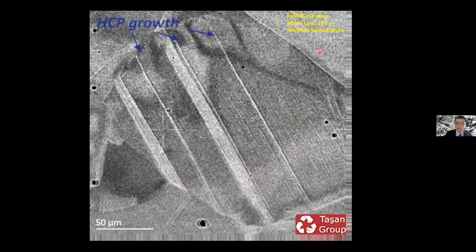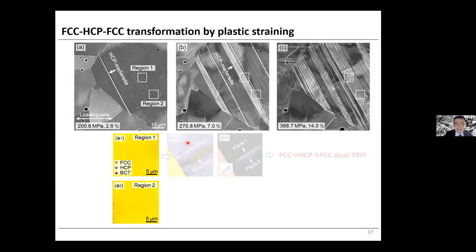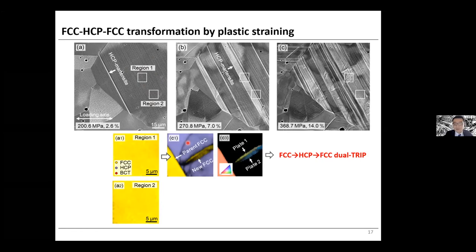To test the hypothesis of introducing a secondary displacive transformation in the strain-induced martensite, we start with an iron-manganese-cobalt-chromium alloy and perform an in-situ TEM straining experiment at a quasi-static strain rate. As we proceed with straining, we see nucleation of band-like HCP martensite. Focusing on region one and performing in-situ EBSD analysis, we see a phase transformation cycle going from FCC through plastic straining to HCP martensite nucleation, and upon further straining to around 14% plastic strain, a final FCC phase is nucleated within the HCP band that was induced by prior straining.